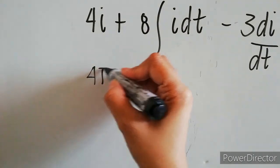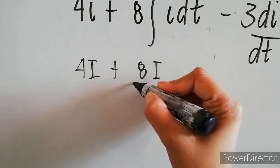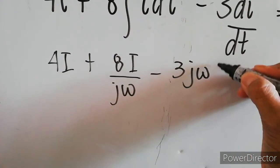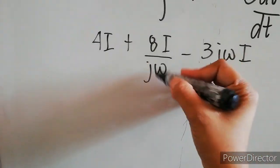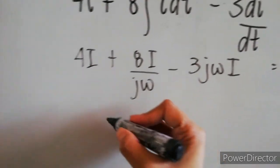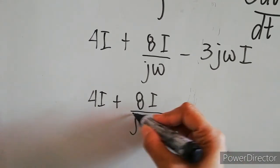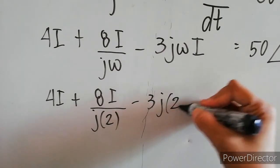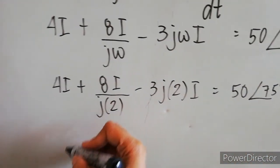Now, let's simplify the equation. So, 4I + 8I/(jω) - 3jωI. Now, let's substitute the given ω, the angular frequency, which is equal to 2.